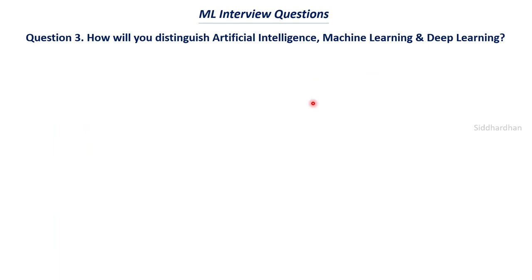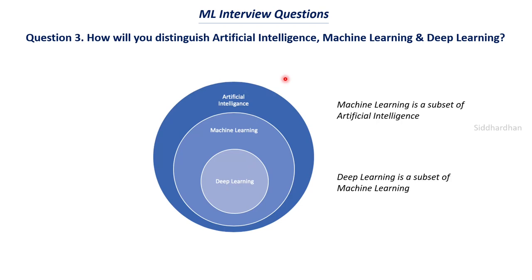The third important question is: how will you distinguish artificial intelligence, machine learning, and deep learning? A lot of people don't know the clear answer. Basically they are not the same thing — artificial intelligence is a broader field used to build smart and intelligent machines. Machine learning is a subset of artificial intelligence, and deep learning is further a subset of machine learning. Machine learning is a technique we use to implement AI, and deep learning is a subset of machine learning.